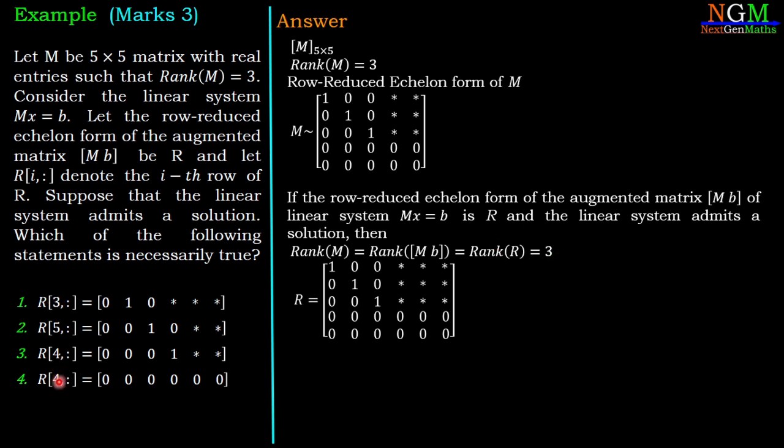The options are about the rows of matrix R. The first option is about the third row of matrix R, which is [0 0 1 * * *]. Here, the third row in the option is [0 1 0 * * *], which is not equal to the third row of R. So the first option is wrong.